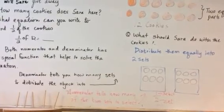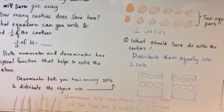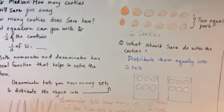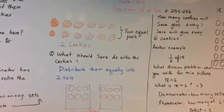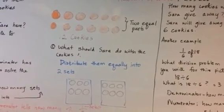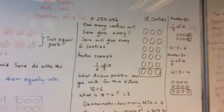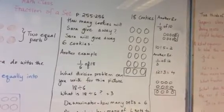Numerator tells how many of the 2 sets to select. So you have to select 1 of them, and inside 1 of them, how many cookies are there inside the set? It is 6. So what should Sarah do with the cookies? She first has to distribute them equally into 2 sets, and how many cookies will Sarah give away? Sarah will give away 6 cookies.